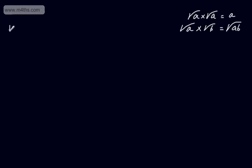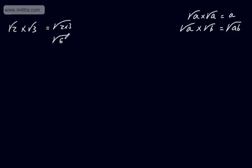We'll start with a nice straightforward example: root 2 times by root 3. We can see that this falls into the second rule. All we have is the root of 2 times 3, which gives us the root of 6. In the same way, if we were asked to write the root of 6, it's the root of 2 times by the root of 3. So working this backwards can often be helpful — it just becomes the root of AB, the product of the two.